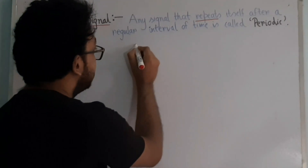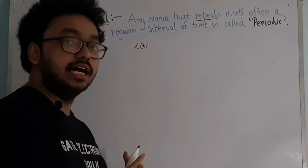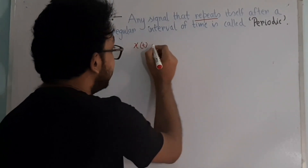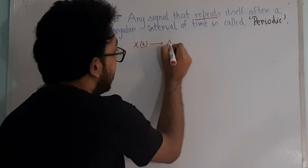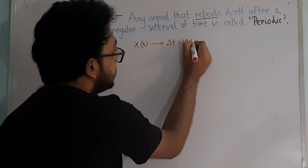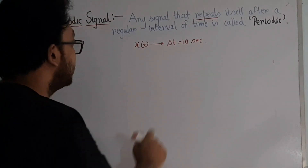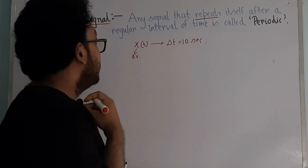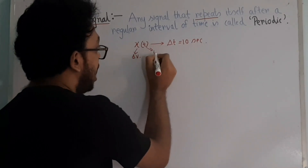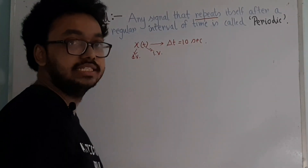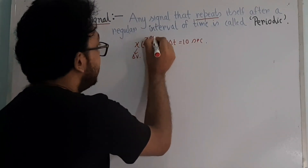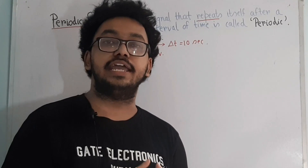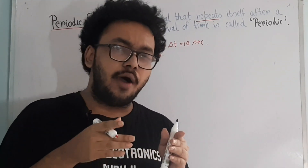Suppose we have a signal X(T) and this signal repeats itself after every 10 seconds. Here X is the dependent variable and T is the independent variable, given in seconds. So I have a signal X(T) which repeats itself after every 10 seconds. Let us go a bit more in depth into this concept.